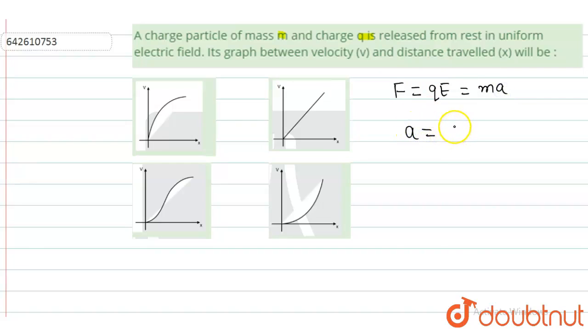Now we have to find the relation between velocity and x. So acceleration a I can write as dv/dt, that is qE/m. Now if I write dv/dt as dv/dx times dx/dt, it is the same thing, that is qE/m.